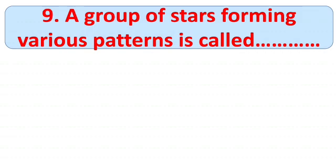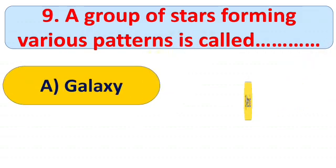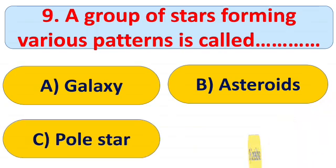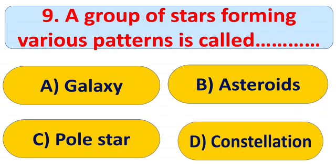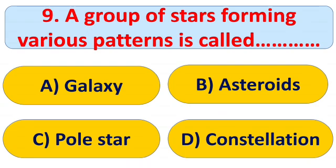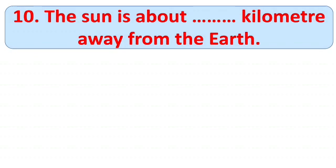Question number nine: a group of stars forming various patterns is called — options: A) Galaxy, B) Asteroids, C) Pole Star, and D) Constellations. If you are new to my channel, check out the previous videos on solar system and celestial bodies. The right answer is D) Constellations.